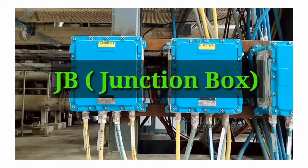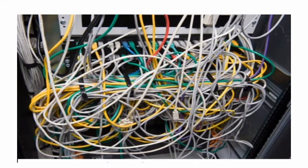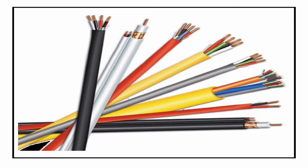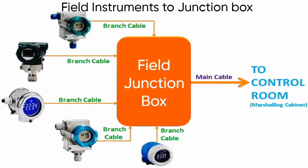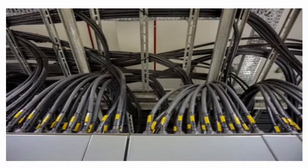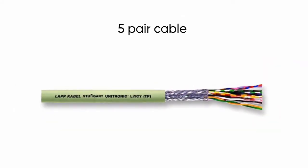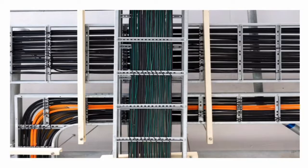Cables used for connecting the field device to the junction box are called branch cables or field cables. Generally, we use one-pair cables for branch cables. Five field devices are connected to a junction box using individual branch cables. For carrying out these five signals to the control room, we need a minimum five-pair cable — meaning one cable has five pairs — and we also have to consider spare cable requirements for future purpose.